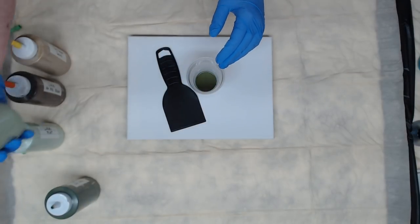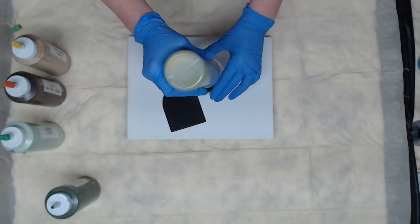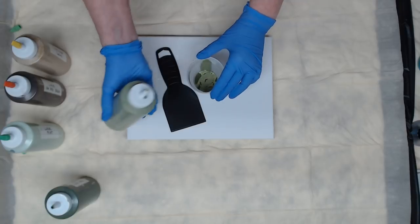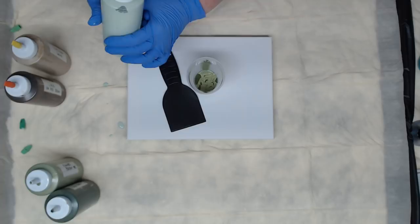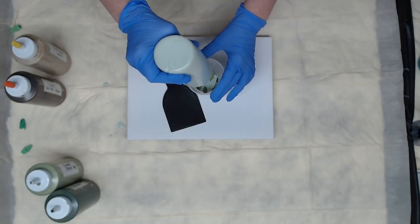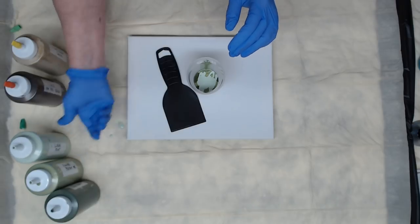Next color will be the Folk Art Peridot Metallic. It's a very pretty color. And then our next color will be the Lucas Mint. SoHo and Lucas are from Jerry's Art-O-Rama.